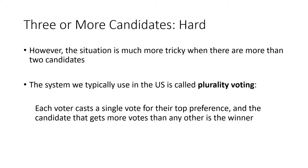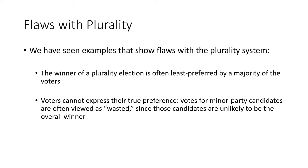The situation with three or more candidates, however, is a lot harder. In the US, typically the system we use is called plurality voting. In plurality voting, everybody votes for their top choice candidate, and the candidate who receives more votes than any other candidate is declared the winner. But we've seen that there are issues with that system. Some of the flaws are that the winner of a plurality election is often least preferred by a majority of the voters.